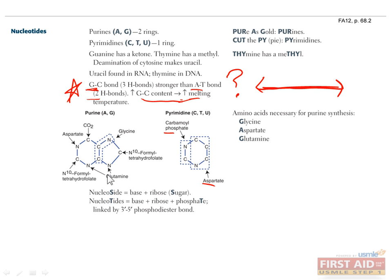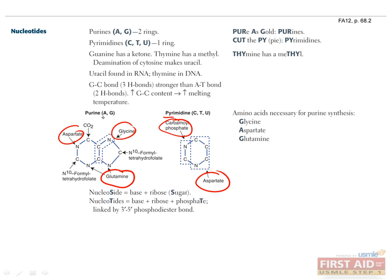You should also know which components are used to build nucleotides. Both types are made primarily from amino acids, with purines requiring aspartate, glycine, and glutamate, and pyrimidines requiring carbamoyl phosphate and aspartate. It just so happens that all the first letters of purine components are A or G, which might help you remember them.